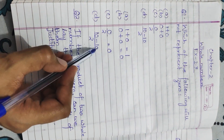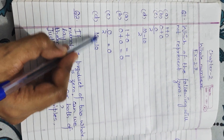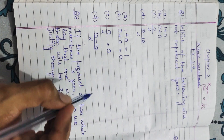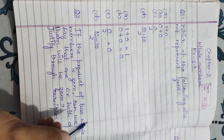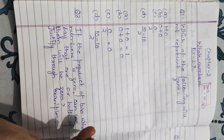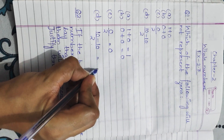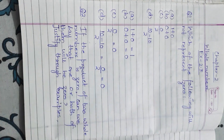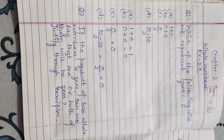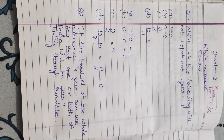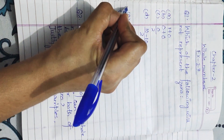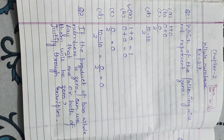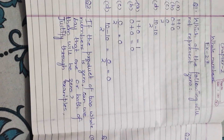Next is part D: they have given 10 minus 10 divided by 2. First of all, we are going to solve 10 minus 10. There is a subtraction sign between these two numbers, so first we subtract them, then divide by 2. 10 minus 10 is 0, and 0 divided by 2 is always 0. So the correct answer is part A — 1 plus 0 equals 1, which is not 0.